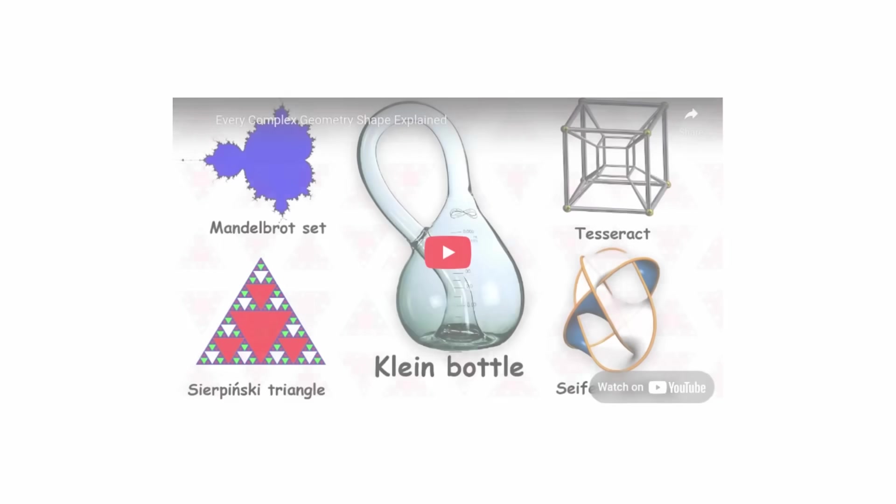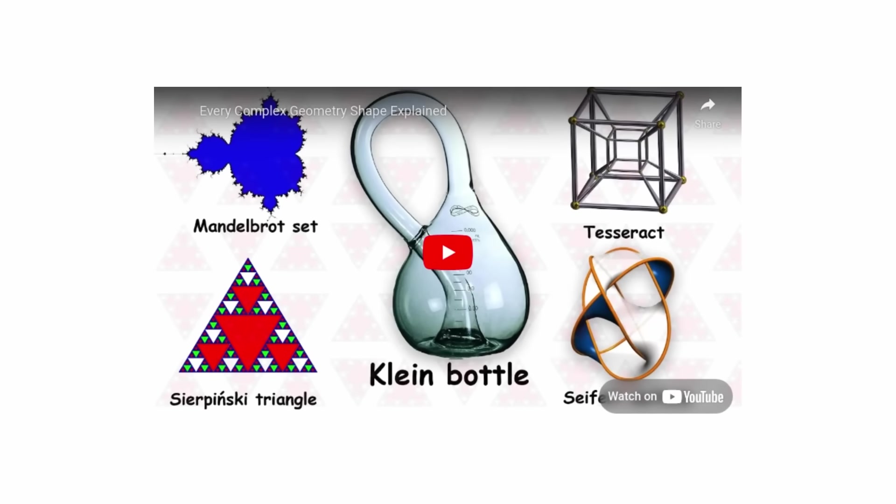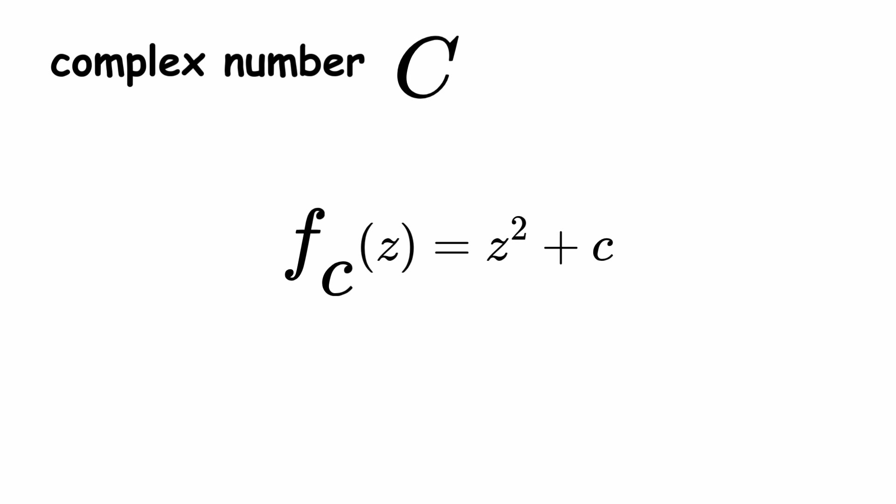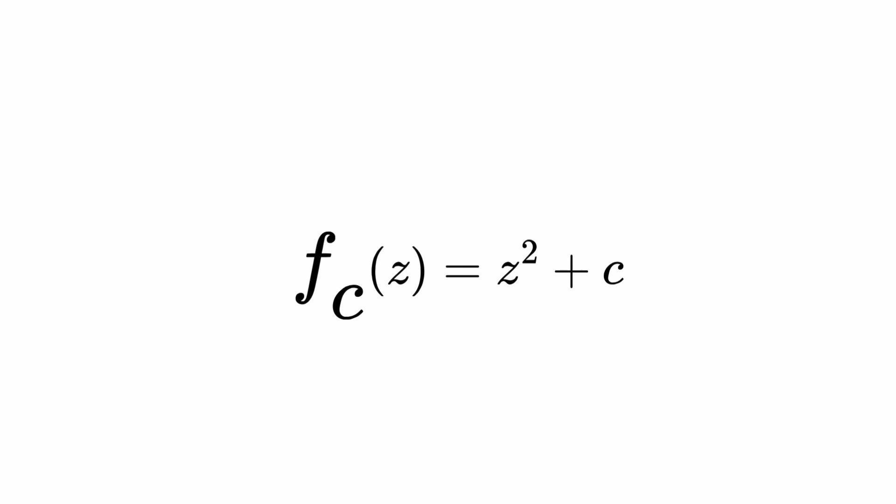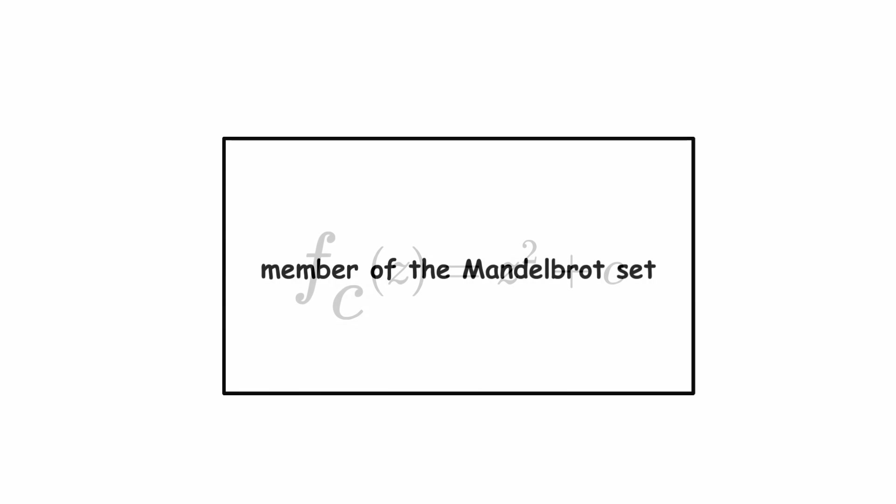Burning ship fractal. You may recall the definition of the Mandelbrot set from part 1. Just to quickly recap, we chose a complex number c, and we defined a complex function fc with the equation fc equals z squared plus c. Starting with z equals zero, we applied this function over and over again. If we got a sequence that didn't diverge to infinity, then we included the number c as a member of the Mandelbrot set.